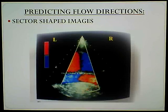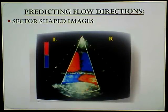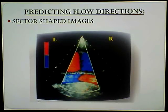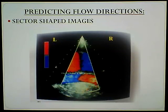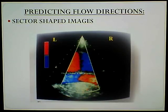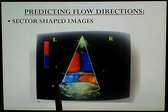Now this is the fun stuff, but this is very easy. We're going to predict flow directions. You will have pictures just like this on the registry. In your book on page 316, through the next couple of pages, you're going to have some examples. They want you to determine, using this map, some answers. This is how, with a sector-shaped image - notice the sector or the fan. You're going to use this color Doppler image to answer questions regarding the direction of blood flow. First, examine the color map. Look at the color map - this is the map.